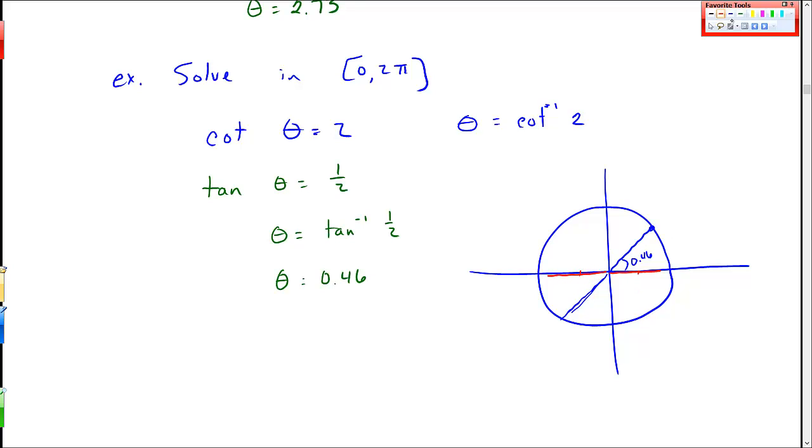And I need this length to line up with this length, right there. And this vertical distance to line up with that vertical distance, right there. So this angle is the same here. So this is where I get, then I get another theta equals π plus 0.46.